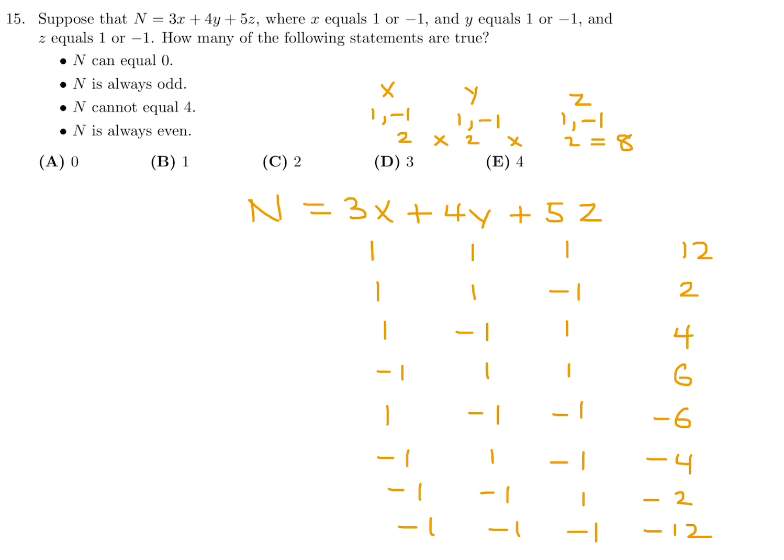Let's go through these now. N can equal 0. Well, none of those are 0. N is always odd. I don't think it's ever odd. That's wrong. N cannot equal 4. It can equal 4. So that's wrong. N is always even. It is always even. So of those four statements, only one is true. Therefore, number 15. The answer is B.